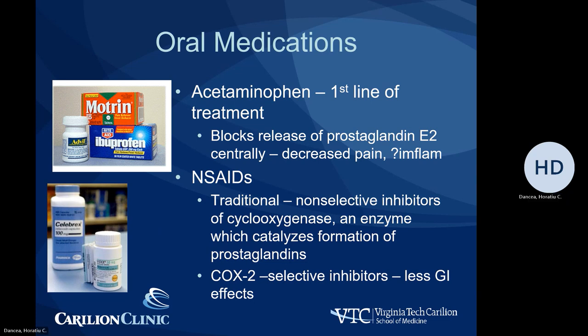Typical non-steroidal anti-inflammatories like ibuprofen and naproxen are non-selective inhibitors of cyclooxygenase, an enzyme that participates in the formation of prostaglandins, which are pro-inflammatory proteins. Slightly newer COX-2 selective inhibitors like Celebrex cause less GI effects and fewer side effects, with a similar good improvement in anti-inflammation.